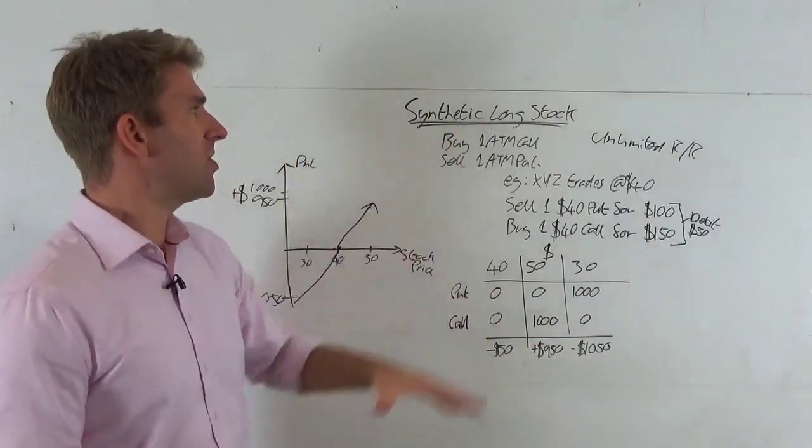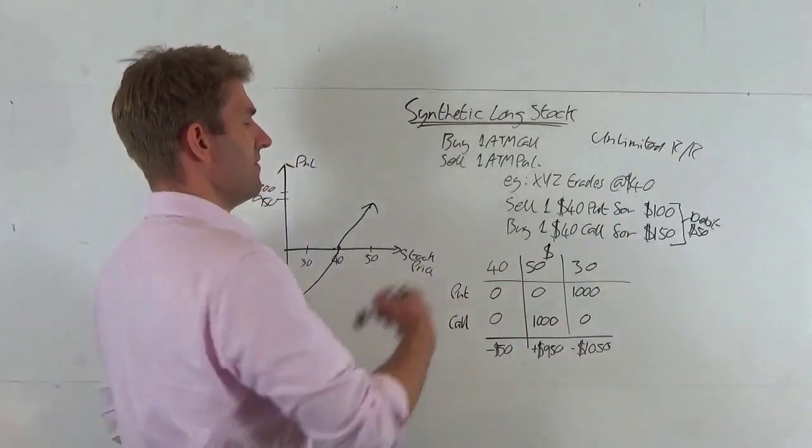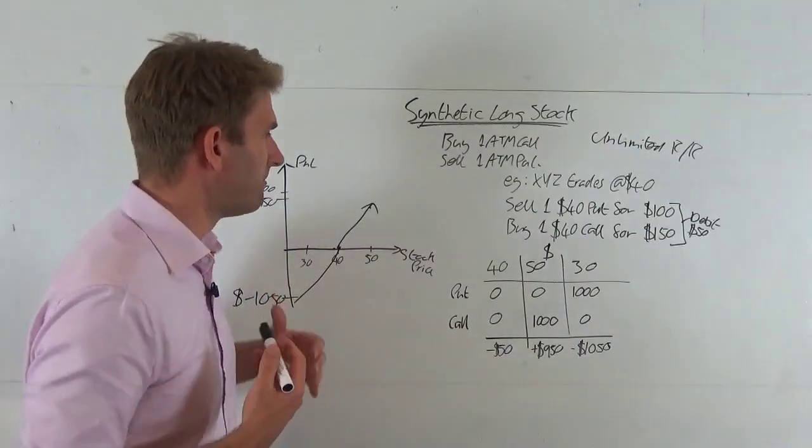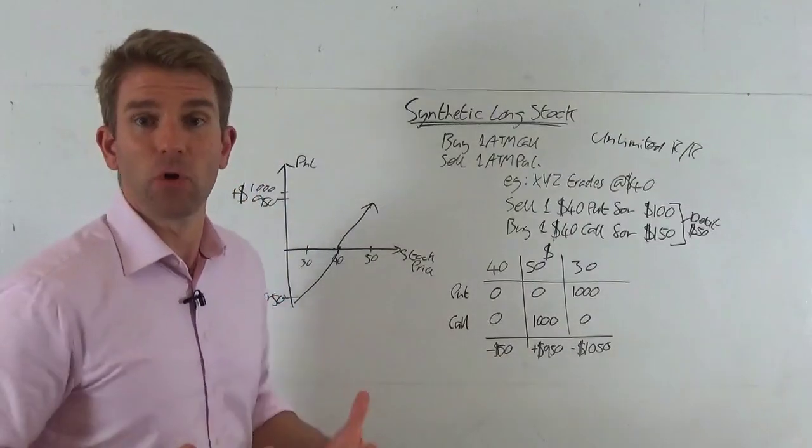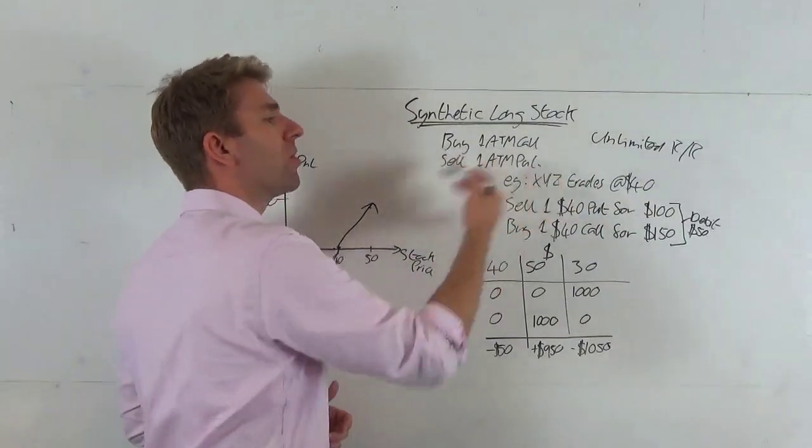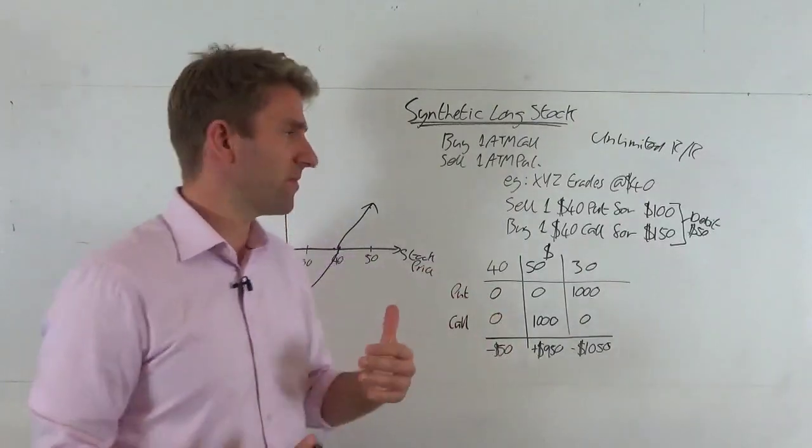So that's where you create a synthetic long stock. Now the advantage you kind of have is that if at some point you thought that volatility was going to expand, or you just wanted to have the call and take the put option off, you could close that and bring it on and off as you saw fit. Rather than just being long stock, which didn't give you much flexibility, this might give you some flexibility.